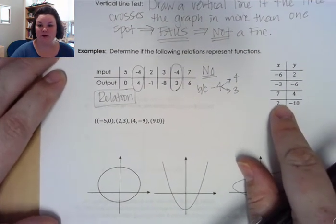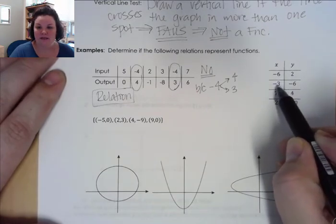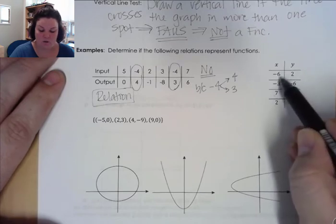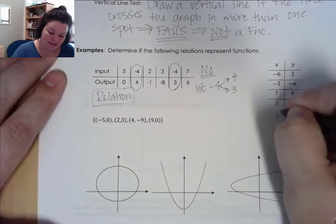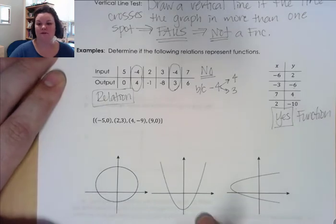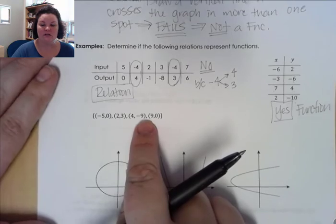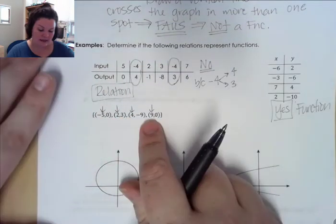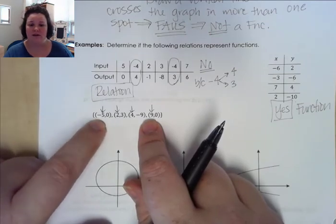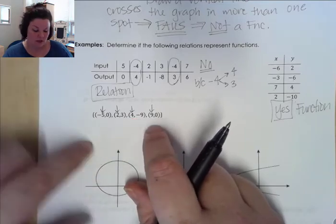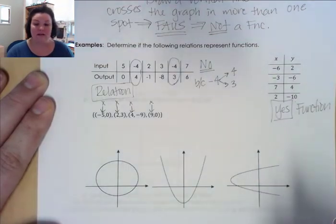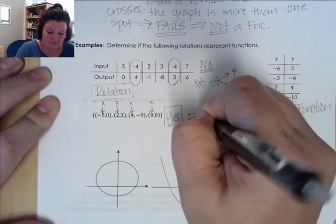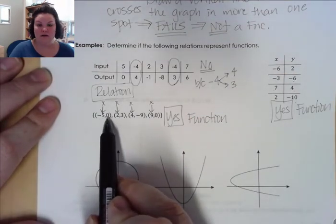Looking at the next table: negative 6 is tied to 2, negative 3 is tied to negative 6, 7 is tied to 4, and 2 is tied to negative 10. All of my inputs are only tied to one output, so yes, this is a function. For the set of ordered pairs, none of the x values are repeated: negative 5 goes to 0, 2 goes to 3, 4 goes to negative 9, and 9 goes to 0. Because all x values are unique, this is also a function — every x is paired with only one y.